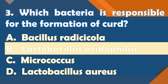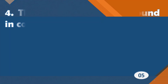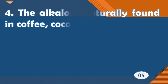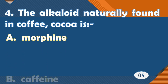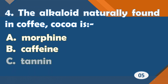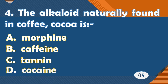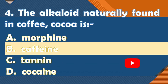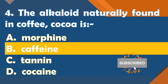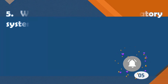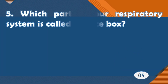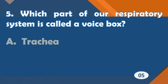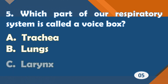The right answer is option B: Lactobacillus acidophilus. The alkaloid naturally found in coffee and cocoa is — the right answer is option B: caffeine. Which part of our respiratory system is called the voice box?